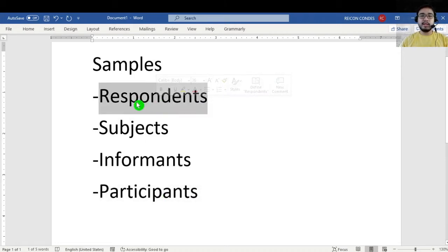More often than not, respondents are used in survey studies and quantitative studies. Subjects are points of investigation, specifically when you are observing the effect of a variable. Informants are for those that are giving details, specifically giving data in qualitative studies.